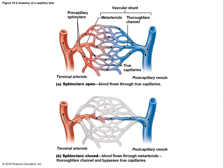A capillary bed is the network of capillaries found between an arteriole and the associated venule. When sphincters are open, blood from the arteriole flows through the entire capillary bed, oxygenating all of that tissue, delivering nutrients, and removing waste like carbon dioxide. When those sphincters close, blood shoots from the arteriole straight through to the venule, bypassing the capillary bed altogether.